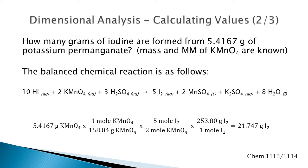In this example, calculate how many grams of iodine are formed from 5.4167 grams of potassium permanganate. The mass and molar mass of solid potassium permanganate are known, and the balanced chemical reaction is given. Start with the component you know two pieces of information about: the mass and molar mass of potassium permanganate.